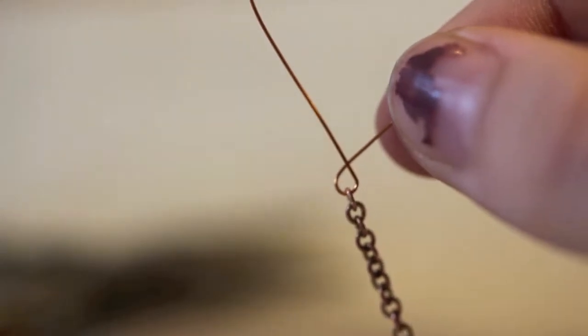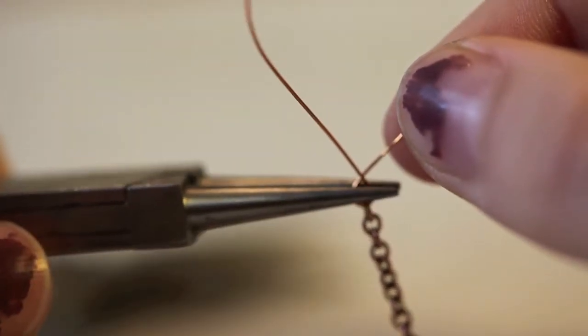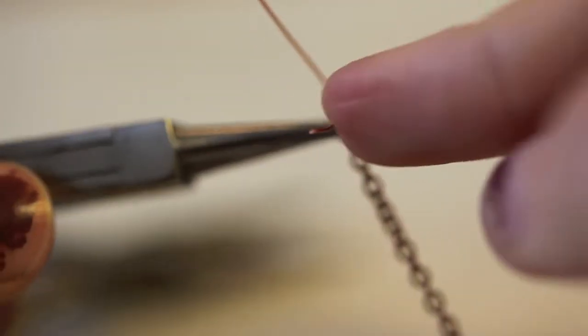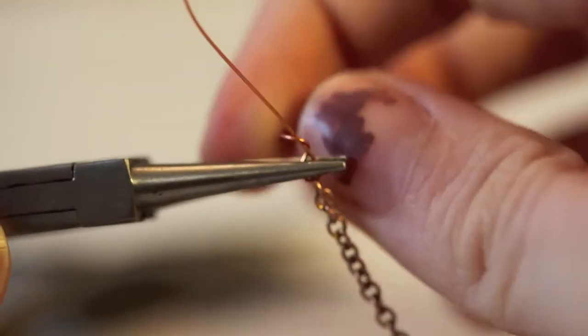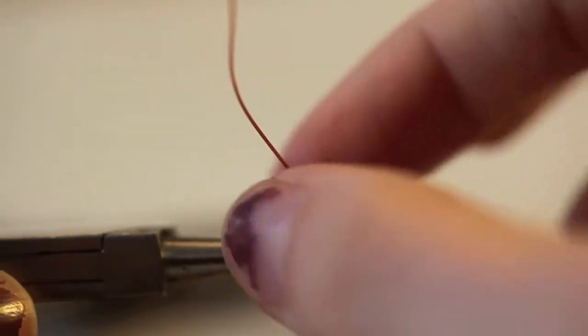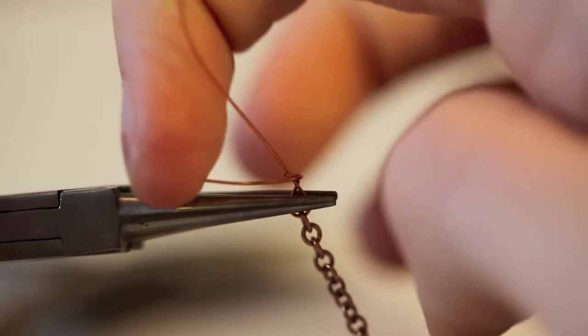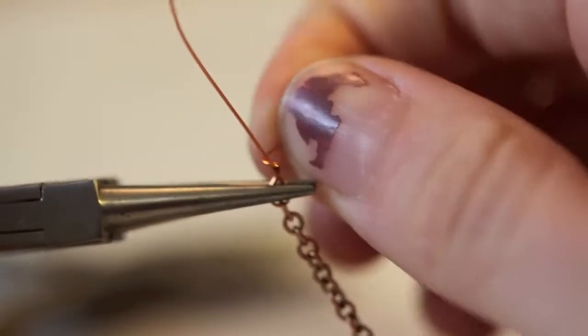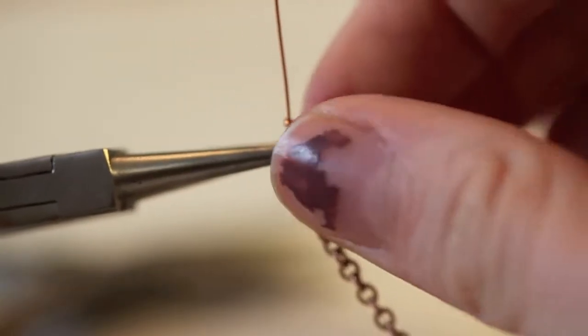Using round nose pliers, grasp wire loop horizontally across both sides. The chain should be inside the loop on the opposite side of the opening. Then coil the short piece of wire around the longer piece about two to four times. Take care not to twist the two wire pieces but instead create coils that are stacked tightly on top of one another.